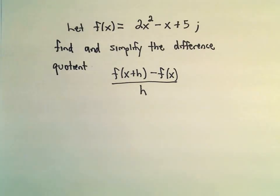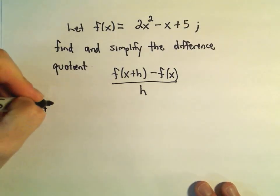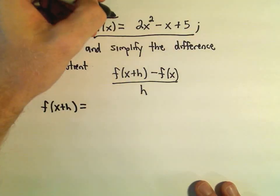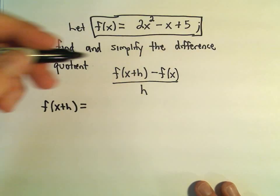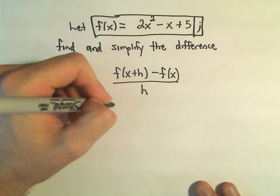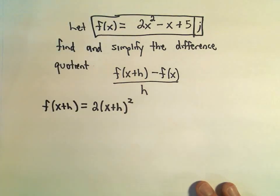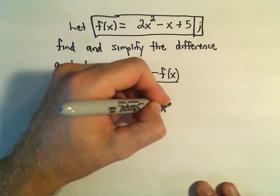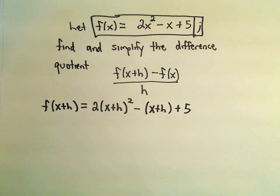So again, if we figure out f of x plus h, if this is my function f of x, to get f of x plus h, we would simply take 2 times x plus h quantity squared. We would subtract away the quantity x plus h and then have plus 5 left over.